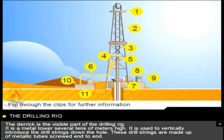The derrick is the visible part of the drilling rig. It's a metal tower several tens of meters high. It's used to vertically introduce the drill strings down the hole. These drill strings are made up of metallic tubes screwed end-to-end.